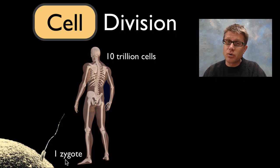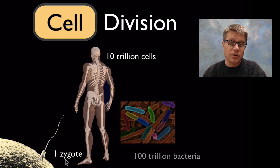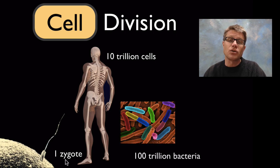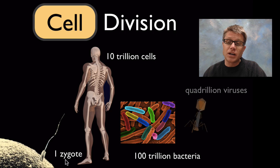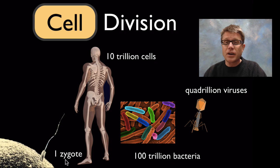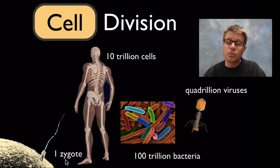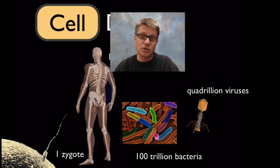To increase that number even further, look in your gut — the bacteria living in your digestive tract are going to outnumber the cells in your whole body ten to one, around a hundred trillion bacteria. And viruses living in your gut outnumber those bacteria ten to one, giving us a quadrillion viruses. Viruses aren't technically cells, but everything else I've described reproduces through a process called cell division.